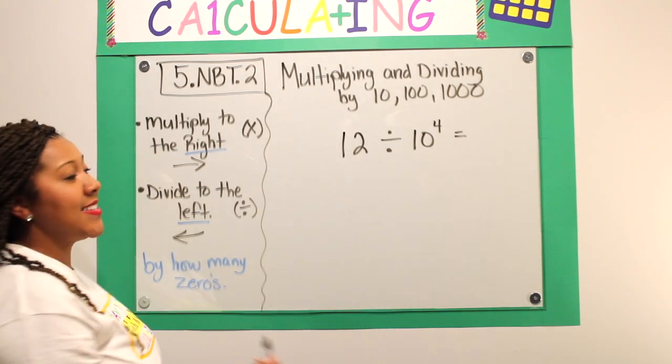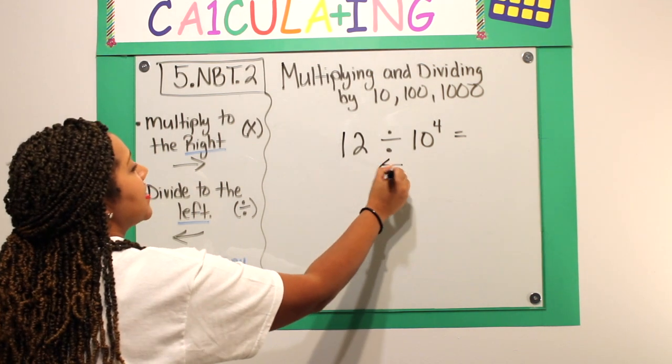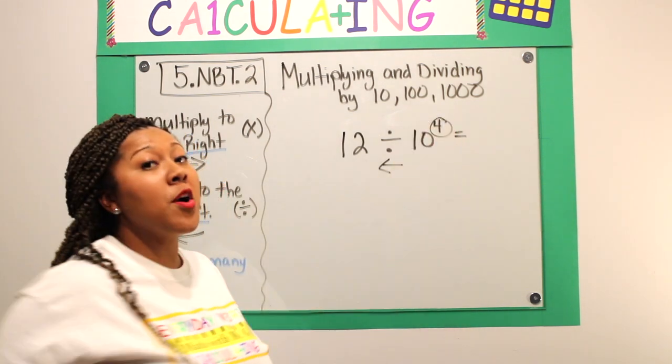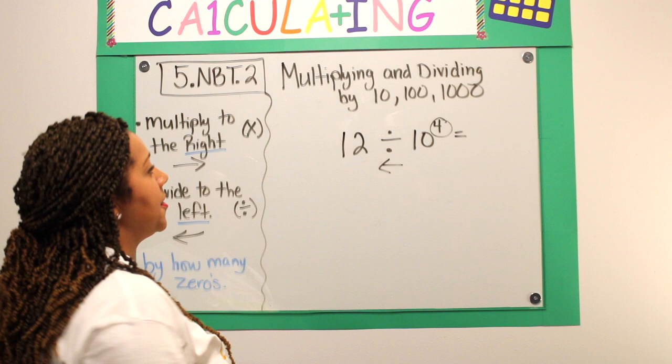I have my division sign. That means I'm moving my decimal to the left. Well, how many places am I moving it? I'm moving it four places to the left.